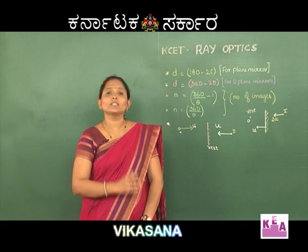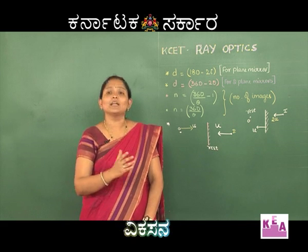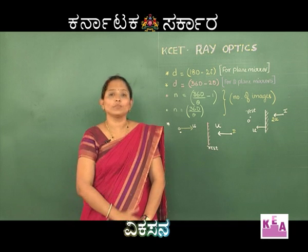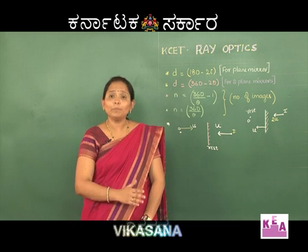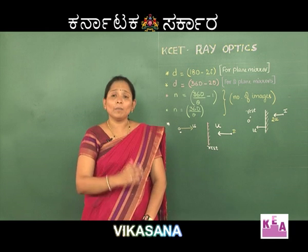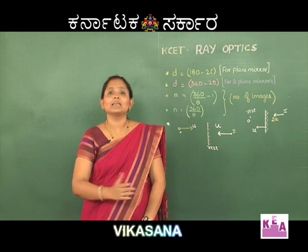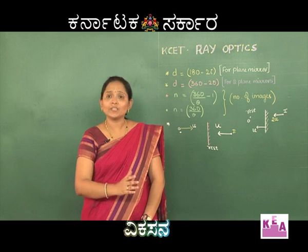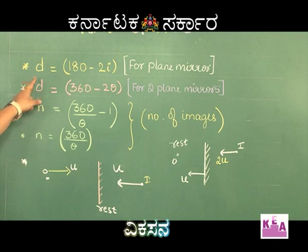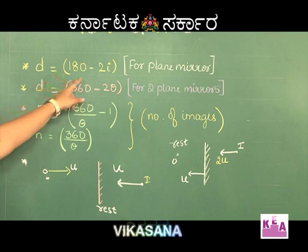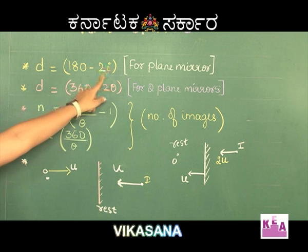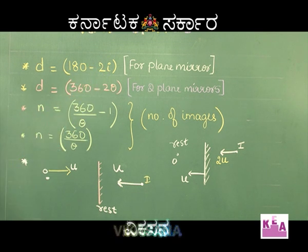Another topic which I would like to teach you is regarding mirrors, where I would like to take up the concept of plane mirrors. In a plane mirror, when light is incident, the amount of light reflected back is maximum. In such a case, the angle of deviation is given by d = 180 − 2i, where i is the angle of incidence.